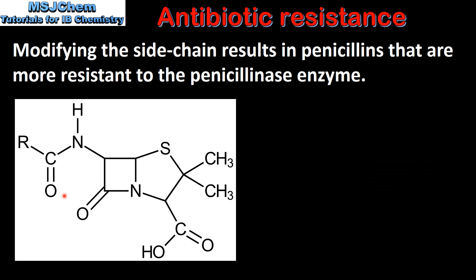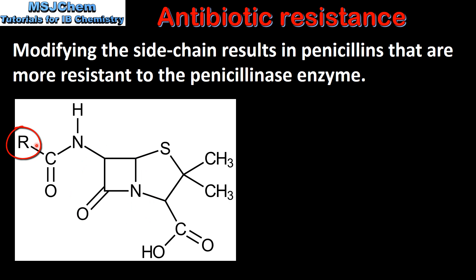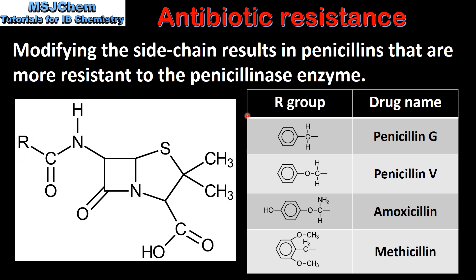Here we can see the general structure of penicillin. In a previous video we identified the beta-lactam ring as being responsible for penicillin's antibacterial properties. In addition to the beta-lactam ring there is also a side chain, which is represented by the letter R. In the table on the right we can see some examples of different R groups and the drug name. Modifying the side chain results in different penicillins which are more resistant to the penicillinase enzyme.